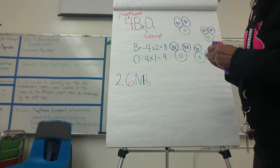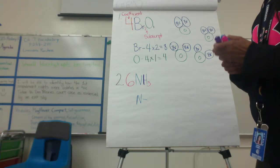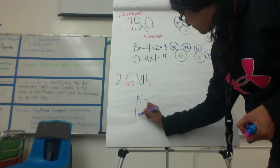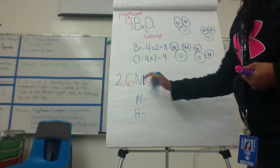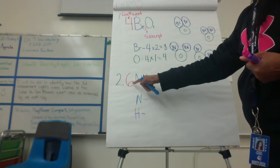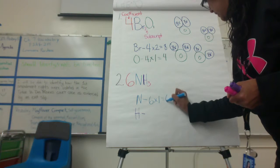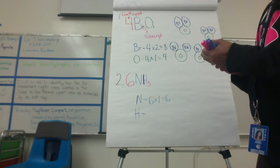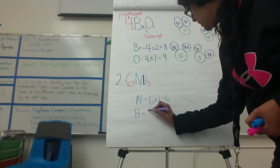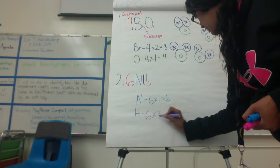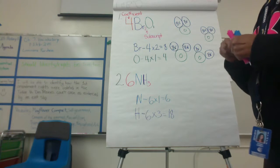I need to separate the N to find out how many nitrogens I need in my drawing, then draw hydrogen underneath. According to what I said earlier, I multiply six by the subscript. There's no subscript on N, so it's 6 × 1 = 6 — I have six nitrogens. For hydrogen, I have a coefficient of six and a subscript of three, so 6 × 3 = 18. There are 18 hydrogens.